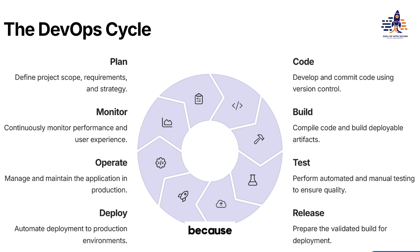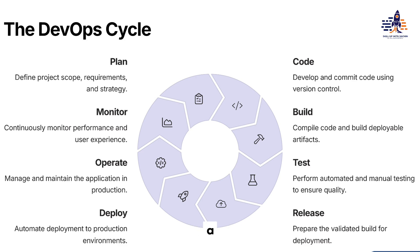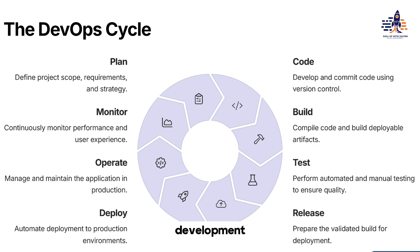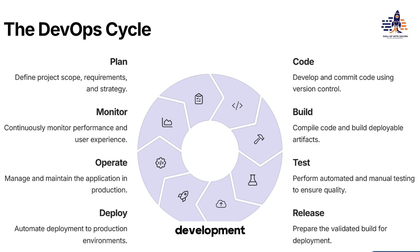Agile bridges the gap between customers and developers because customer feedback is there every time. There are scenarios where a lot of disagreements happen between the development and customer team, so we have to make sure how development and operations are bridging up the gaps. Similarly, in Agile, it is happening between the customer and development.